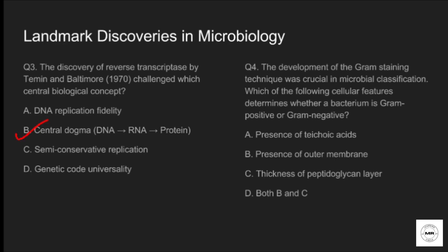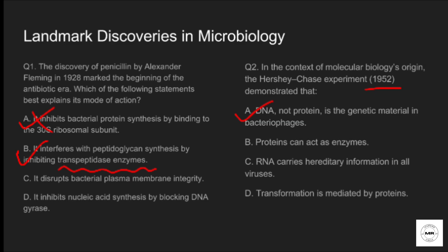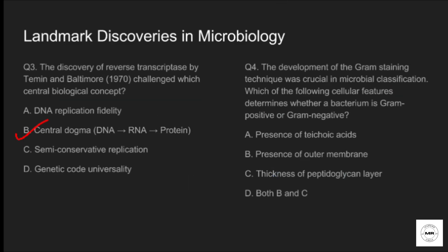Question four: the development of gram staining technique was crucial in microbial classification. Which cellular features determine whether a bacterium is gram positive or gram negative? Option A: presence of teichoic acid. Option B: presence of outer membrane. Option C: thickness of peptidoglycan layer. Option D: both B and C. The correct answer is option D, both B and C. Gram positive bacteria have thick peptidoglycan and teichoic acid, while gram negative bacteria have thin peptidoglycan and an outer membrane.